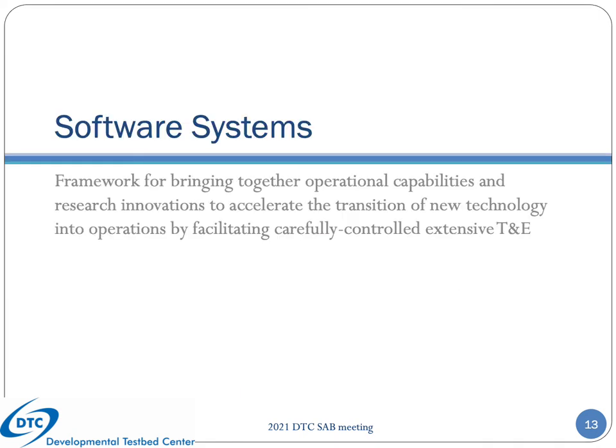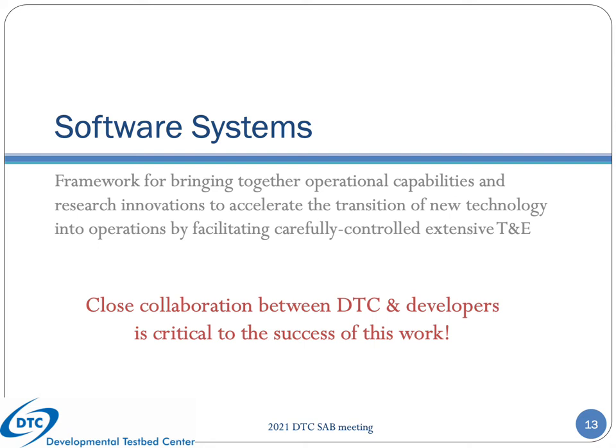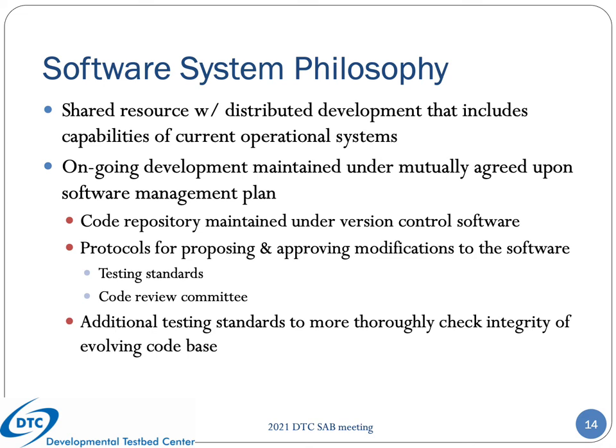I will now turn to describing the various approaches for engaging the community in the R2O process. The first area is software systems, which provides an important framework for bringing together operational capabilities and research innovations to accelerate the transition of new technology into operations by facilitating carefully controlled extensive testing and evaluation. Since the DTC does not actually undertake development for most of the systems it works with, a close collaboration between the DTC and the respective developers is critical to the success of work in this area. All of the software we work with is a shared resource with distributed development that includes the capabilities of current operational systems.